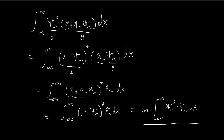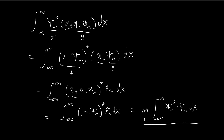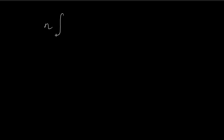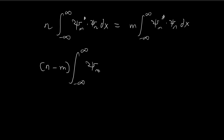So this is another important result we've derived. Recall that initially we derived the first result. That means this integral is equal to this integral. So the first integral we arrived at — n times the integral from negative infinity to infinity of the conjugate of ξ_m times ξ_n — is equal to m times the same integral. If you move everything to the left-hand side, you get (n minus m) multiplied by this integral, which is equal to zero.